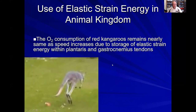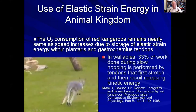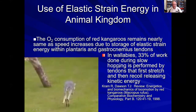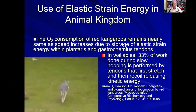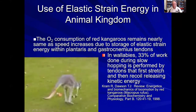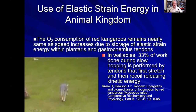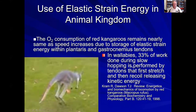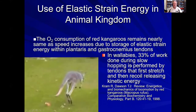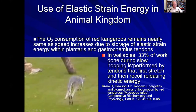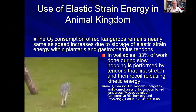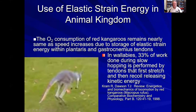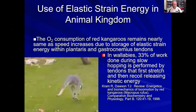Some members of the animal kingdom, especially kangaroos and wallabies, are very good at storing and releasing kinetic energy. Research has shown that wallabies and kangaroos can store a significant amount of their locomotion energy in the long tendons of their body when hopping, by first stretching and storing elastic strain energy as potential energy, and then releasing that as kinetic energy — allowing the animal to save energy during locomotion in a very efficient way.